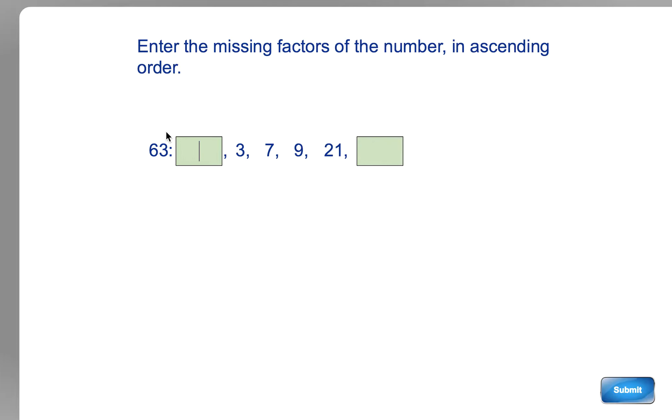So once more, 63 is a multiple, and we're looking for the numbers you have to multiply to get there. Well, we've got 3 and 21, 7 and 9, and every number, of course, always has 1 and the number itself. So the easiest factors of any number are 1 and the number.